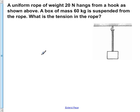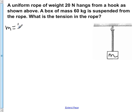A uniform rope of weight 20 newtons hangs from a hook. A box of mass 60 kilograms is suspended from the rope. What is the tension in the rope? We know that we have a box of mass 60 kilograms, so the mass m is equal to 60 kilograms.